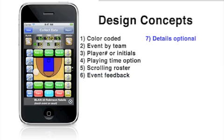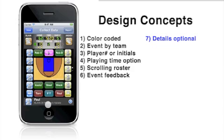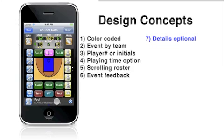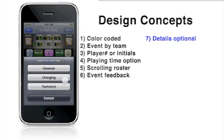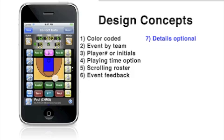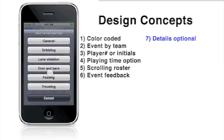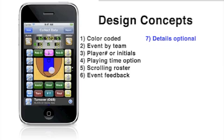If we want we can dig deeper after we record an event. We can see this example by adding a foul. At the bottom of the screen is a blue arrow indicating there is more information for a foul. Selecting that, we see the other information and we can add details about the foul event. Likewise if we add a turnover event, similarly we get a list of details to add to that event.